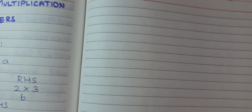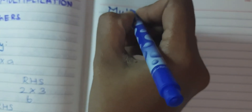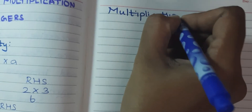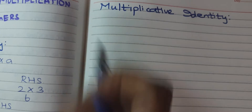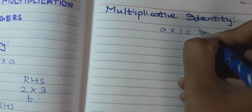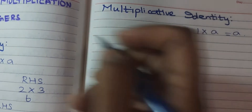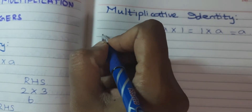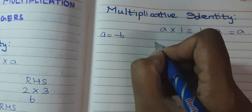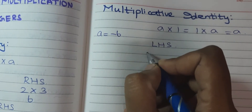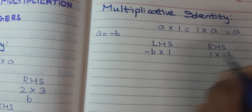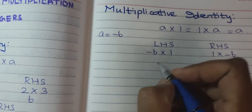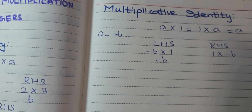The next property is multiplicative identity. The condition is A × 1 = 1 × A = A, where A may be a positive or negative integer. Let me take A = −6. LHS: A × 1 = −6 × 1 = −6. RHS: 1 × A = 1 × (−6) = −6. Any number multiplied by 1 gives the same number.